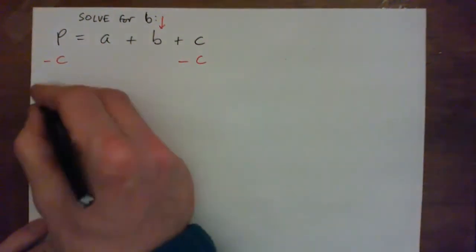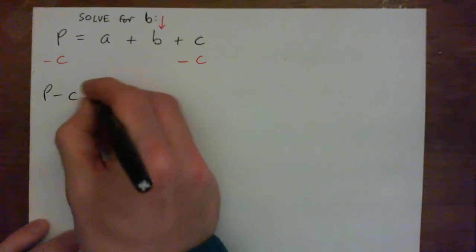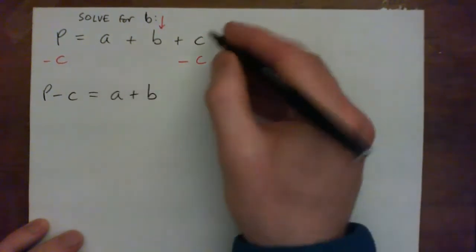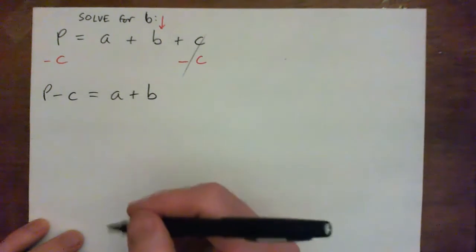Now on the left I'll have P minus C equals, and on the right I have A plus B. C minus C makes zero, so that's gone away.